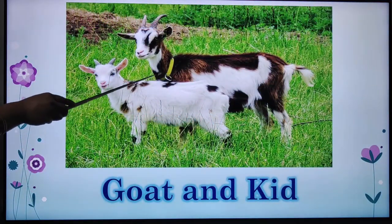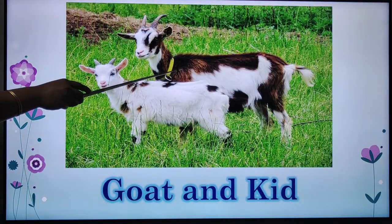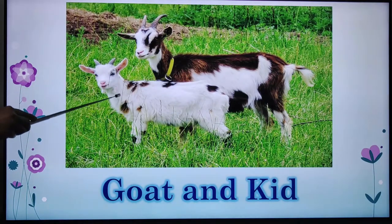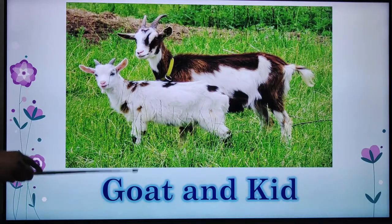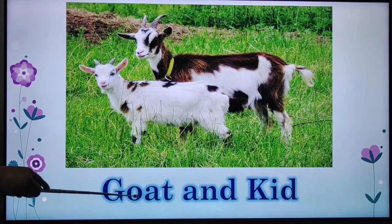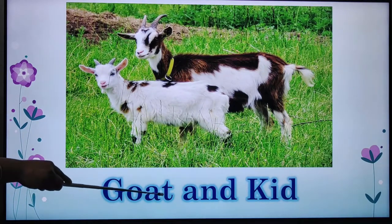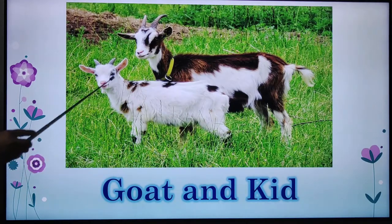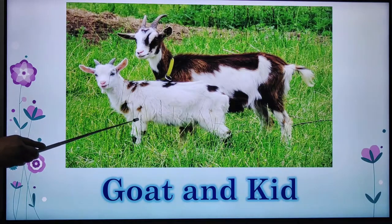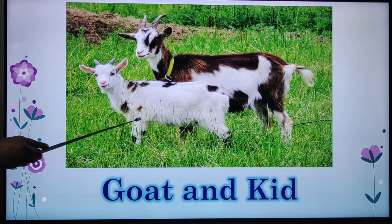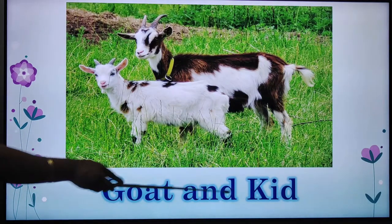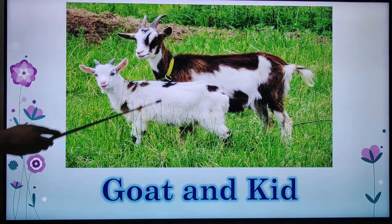Which animal is this children? This is a goat. This is baby goat — the young one of goat. Now let's see the spelling. G-O-A-T, goat. And K-I-D, kid. The young one of goat is called kid. Goat and kid.